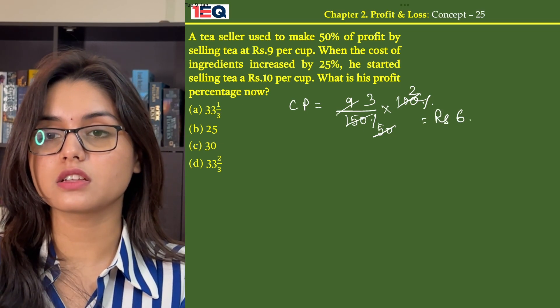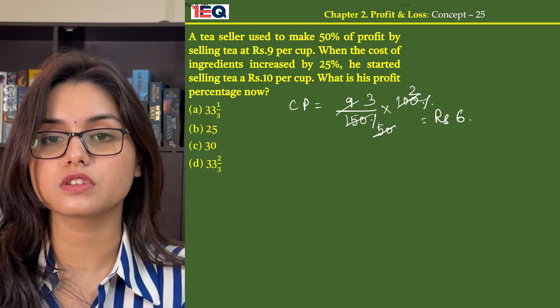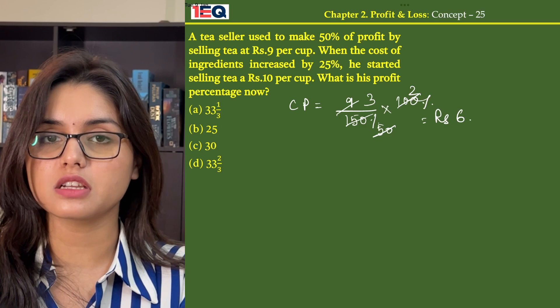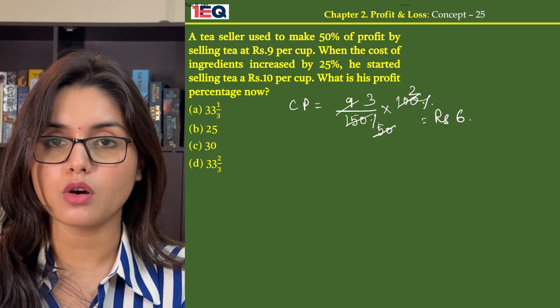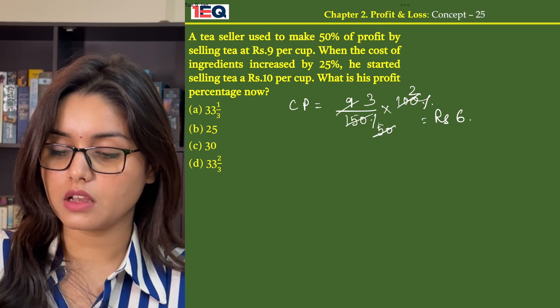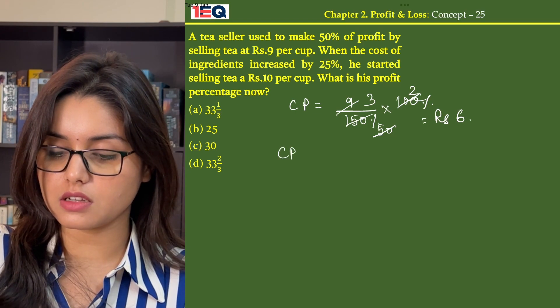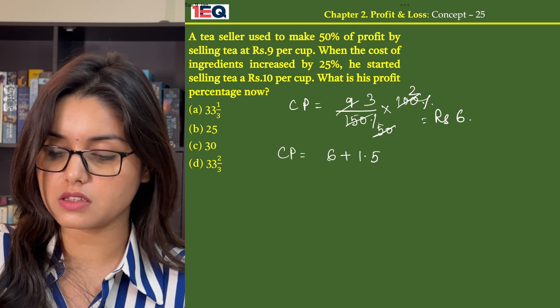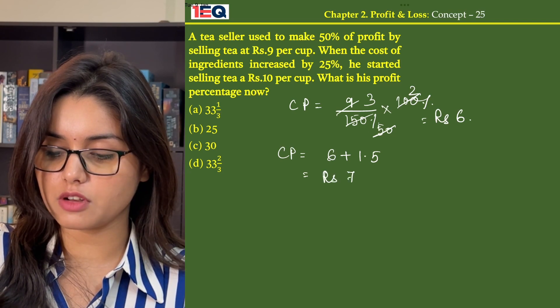The cost of ingredients increased by 25%. So 25% means 1 by 4, or 1.5. His cost price increases and becomes 6 plus 1.5, that is Rs. 7.5.